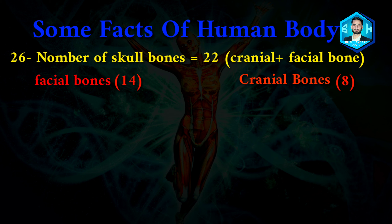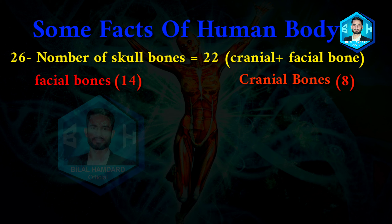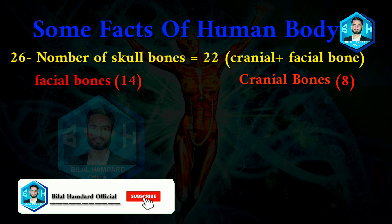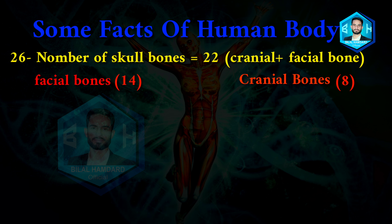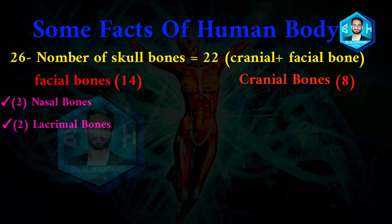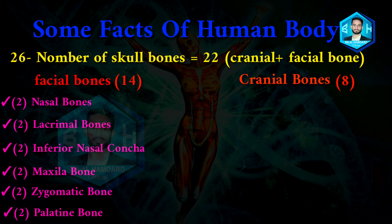In the human body, there are 22 skull bones in total. The facial bones (14) include: 2 nasal bones, 2 lacrimal bones, 2 inferior nasal concha, 2 maxilla bones, 2 zygomatic bones, 2 palatine bones, 1 vomer, and 1 mandible.